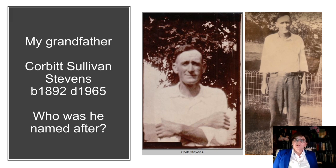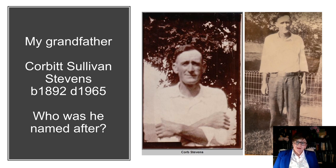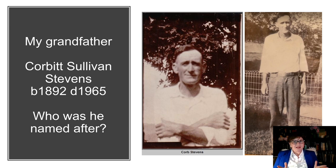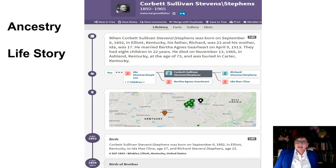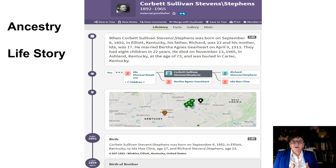Now we're going to start with a case study on my grandfather — my mother's father. His name was Corbett Sullivan Stevens. He was born in 1892 and died in 1965. My question has always been who was he named after? We have nobody by the name of Corbett or Sullivan in our families, not as a first name, middle name, or surname. Families often follow naming patterns, but I couldn't find any. So I went to Ancestry and looked at their tab under Life Story for things going on in the county, nation, or world that might be clues.